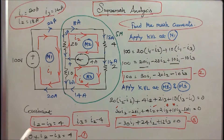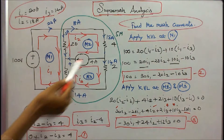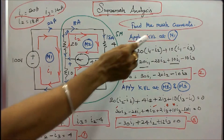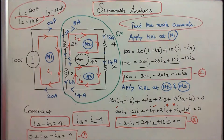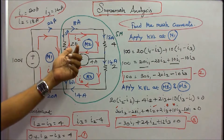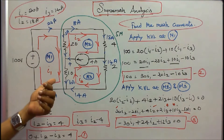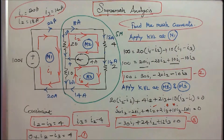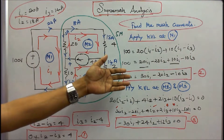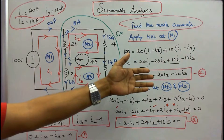The constraint is I2 minus I3 is equal to 4, or I3 is equal to I2 minus 4. This is equation 1. Now I apply Kirchhoff's voltage law at mesh 1. The voltage is 100: 100 is equal to 20 into (I1 minus I2) plus 10 into (I1 minus I3). Simplifying, I get 100 is equal to 30 I1 minus 20 I2 minus 10 I3. This is equation 2.